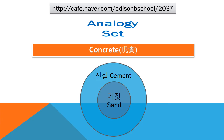콘크리트는 뭐하고 뭘로 이루어져 있나요? 여러 가지 많죠. 물도 필요, 모래도 필요, 시멘트도 필요, 자갈도 필요. 여러 가지 중에 일단 내가 시멘트하고 모래만 얘기할게요. 콘크리트라는 건 이걸 현실로 봤을 때, 콘크리트가 현실이라고 가정했을 때, 진실이라는 시멘트하고 거짓이라는 모래가 섞여져야지 현실이에요. 아주 상징적이죠.